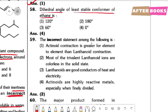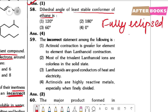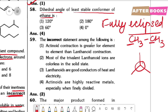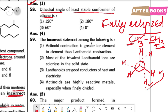Question number 58. The dihedral angle of the least stable conformer of ethane? The least stable conformer of ethane is the fully eclipsed conformation. In ethane (CH3–CH3), the front and back carbons each have three hydrogens. In the fully eclipsed form, both sets of hydrogens eclipse each other, so the dihedral angle between the two hydrogens is 0 degrees, which is option 4.